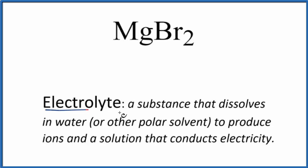Our definition for an electrolyte is a substance that dissolves in water or another polar solvent. It produces ions, and because we have the ions, it conducts electricity. The solution will conduct electricity.